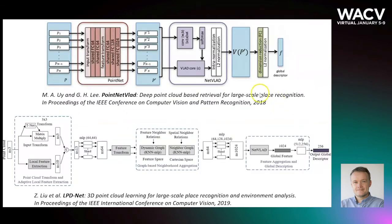The first learning-based method for point cloud-based place recognition was PointNetVLAD. Its feature extraction layer is based on PointNet architecture. Then local features are aggregated using a NetVLAD layer to produce a global descriptor. Unfortunately, PointNet is not well suited to extract informative local features.